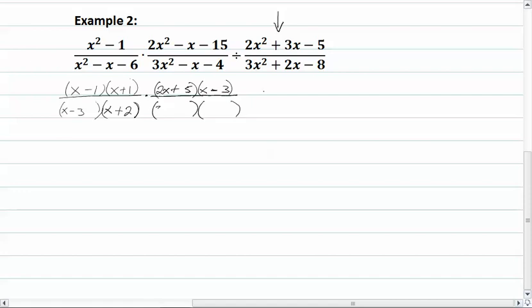For our denominator, we're going to get 3x and x, and we're going to have a negative 4 and a positive 1.